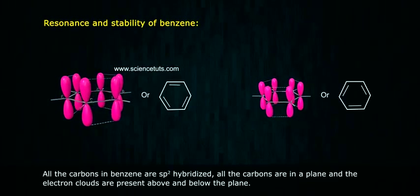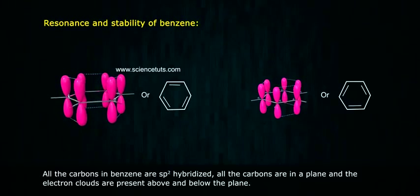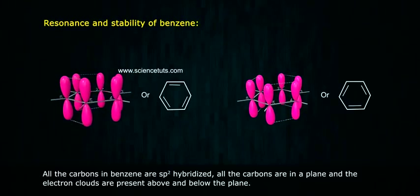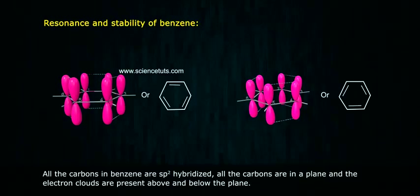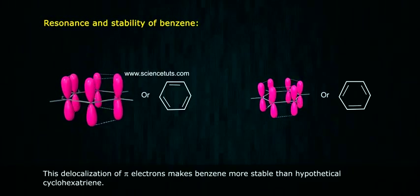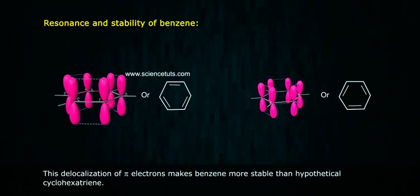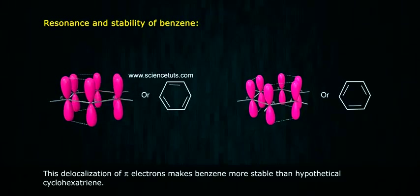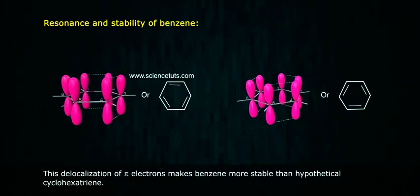All the carbons in benzene are sp2 hybridized. All the carbons are in a plane and the electron clouds are present above and below the plane. This delocalization of pi electrons makes benzene more stable than the hypothetical cyclohexatriene.